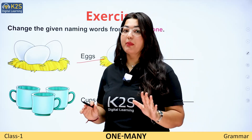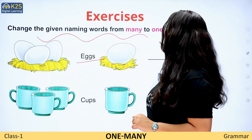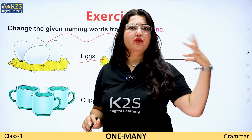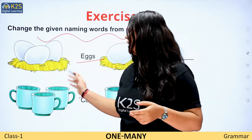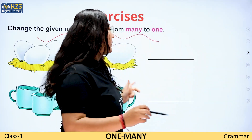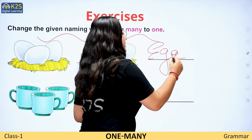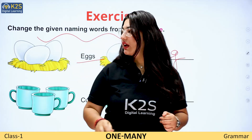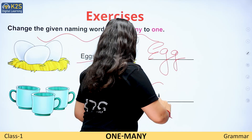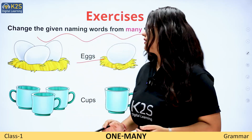Now, what do we have to do here? We have to do many to one — from plural to singular. We have to do eggs here, so I put S. Egg. Cups — cups. That's it.